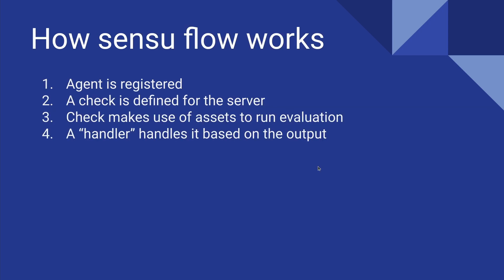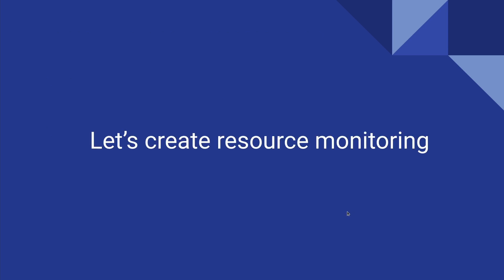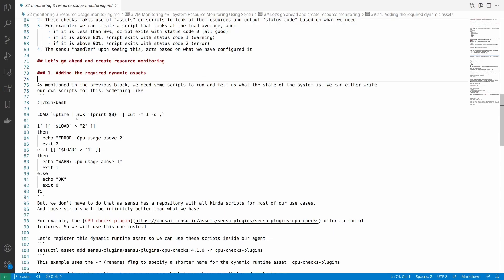An asset is something that helps us run the checks. The overall flow in Sensu is: first, the agent is registered — we did that in the previous video. Then we define a check for a subscription. This check makes use of assets or scripts to run things like CPU usage or memory usage checks. Based on the output, a handler handles the event to maybe send an email, a Slack message, or create a PagerDuty alert to actually call someone up.